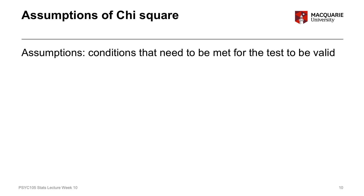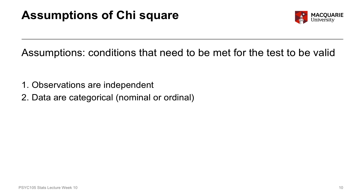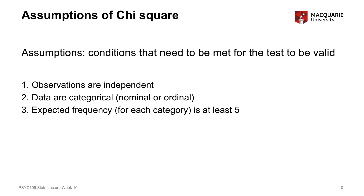We've got three assumptions for our chi-square test. The first is that our observations are independent — if we've got a hundred people, they're a hundred separate people; nobody was sampled twice and nobody affected anybody else's scores. We also need our data to be categorical — either nominal or ordinal variables — and the expected frequencies for each of the categories must be at least five. These three assumptions apply to both the chi-square goodness of fit test and the chi-square test of independence.